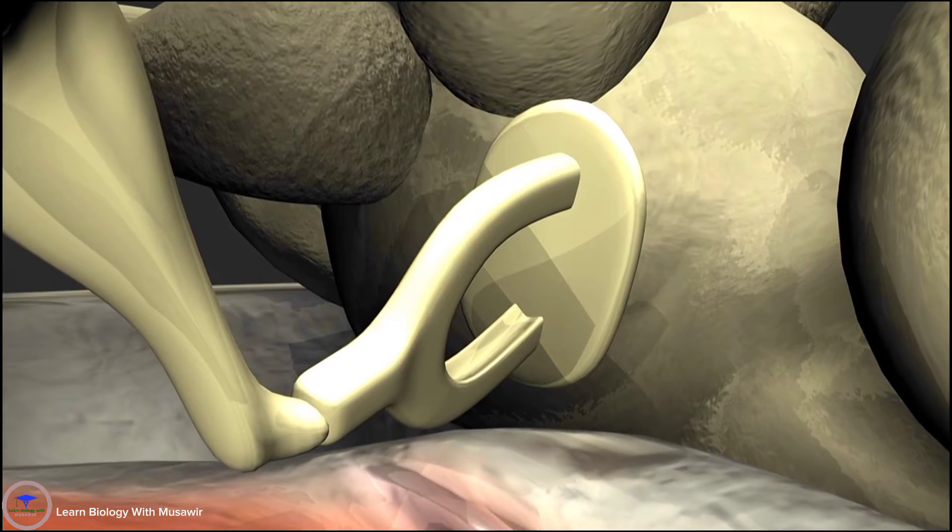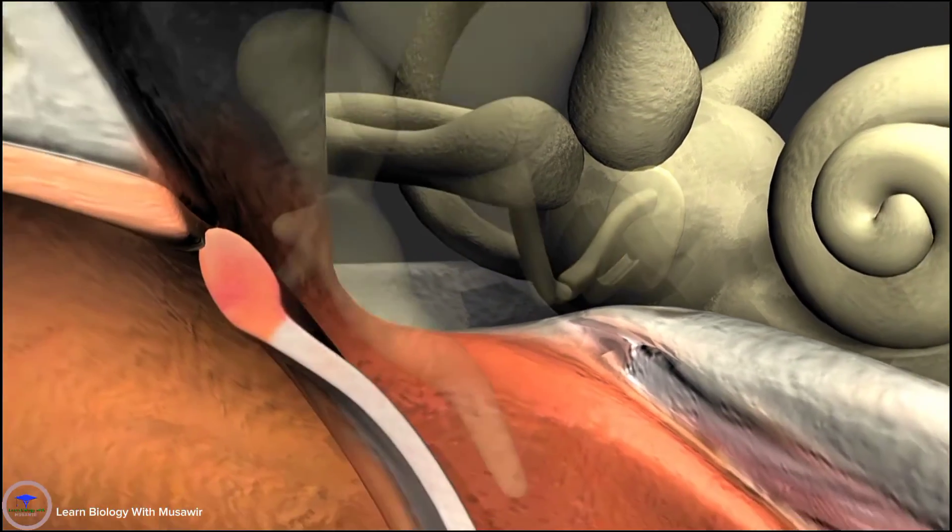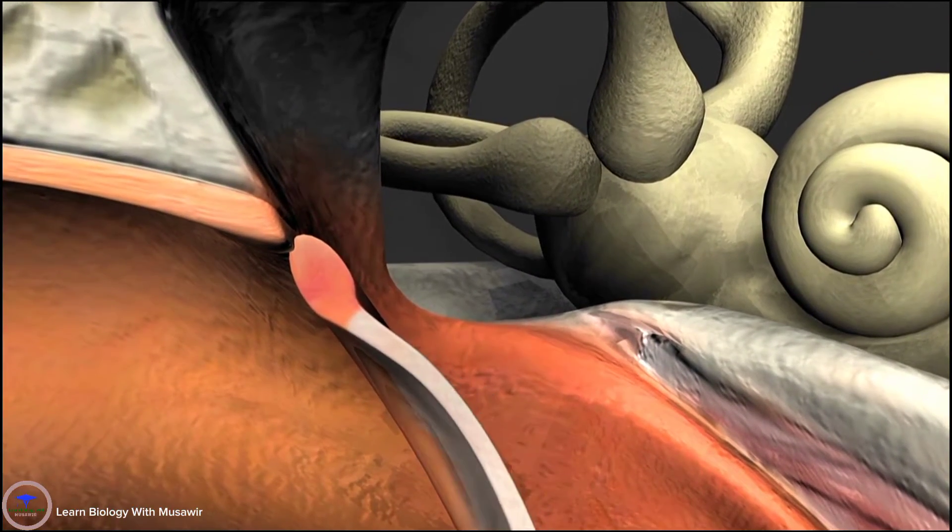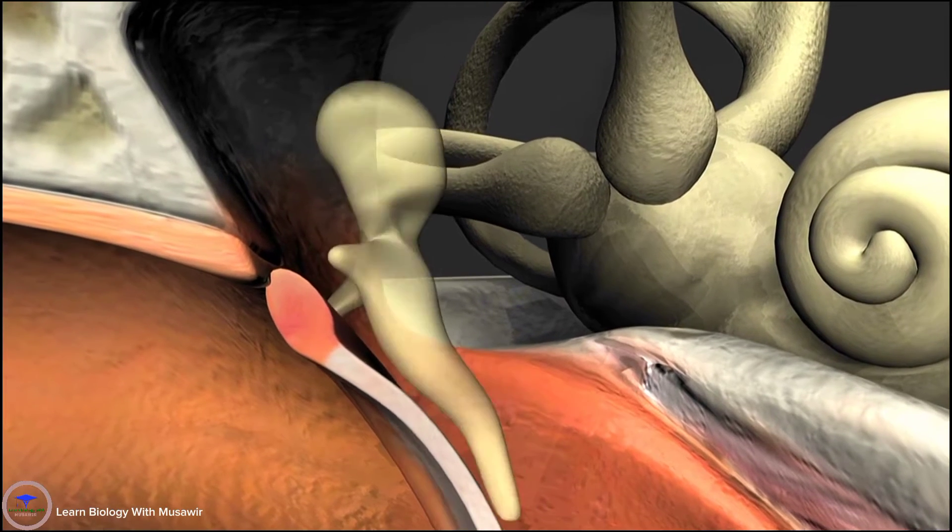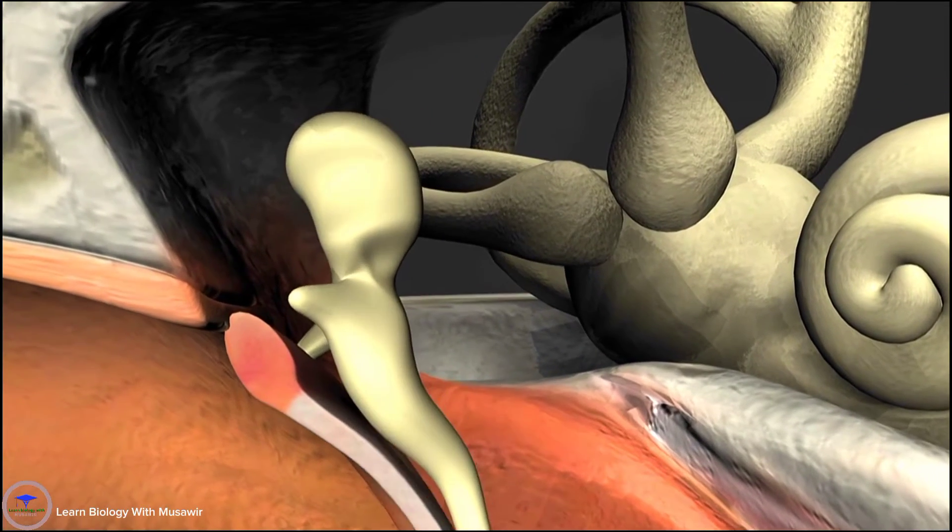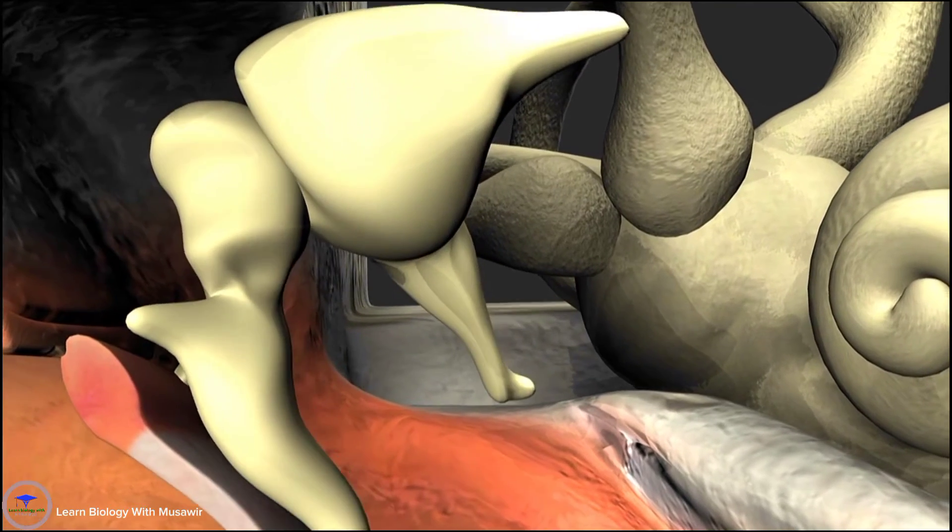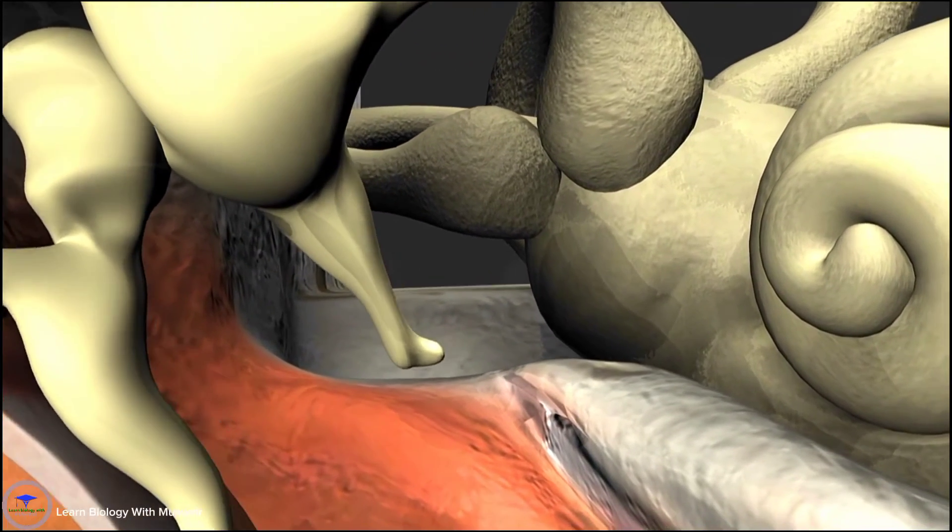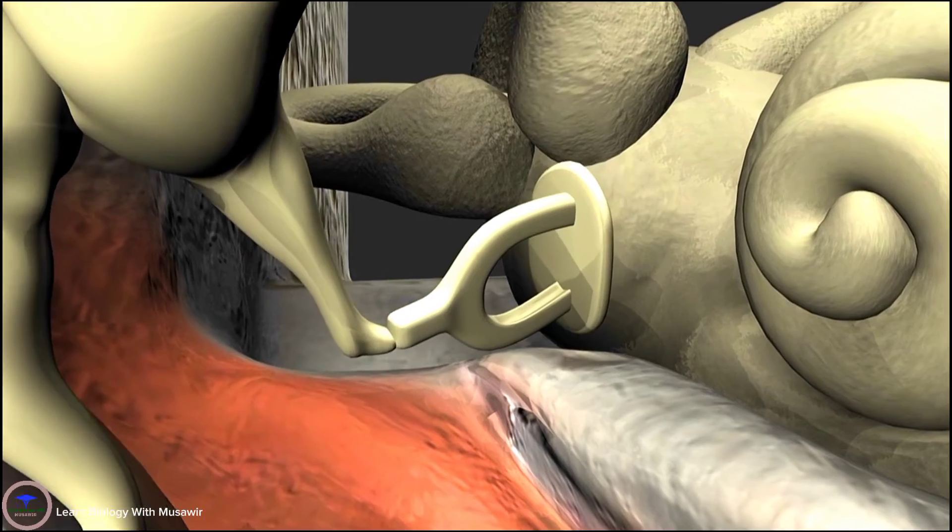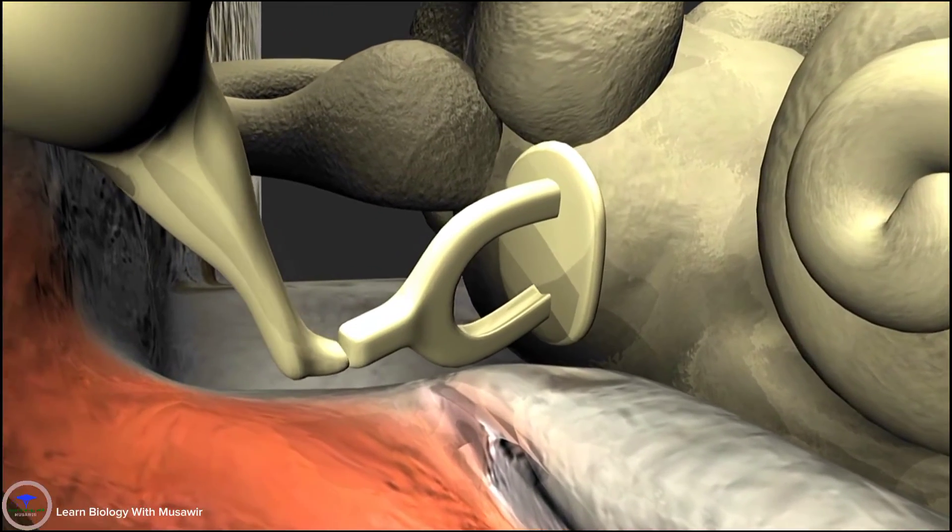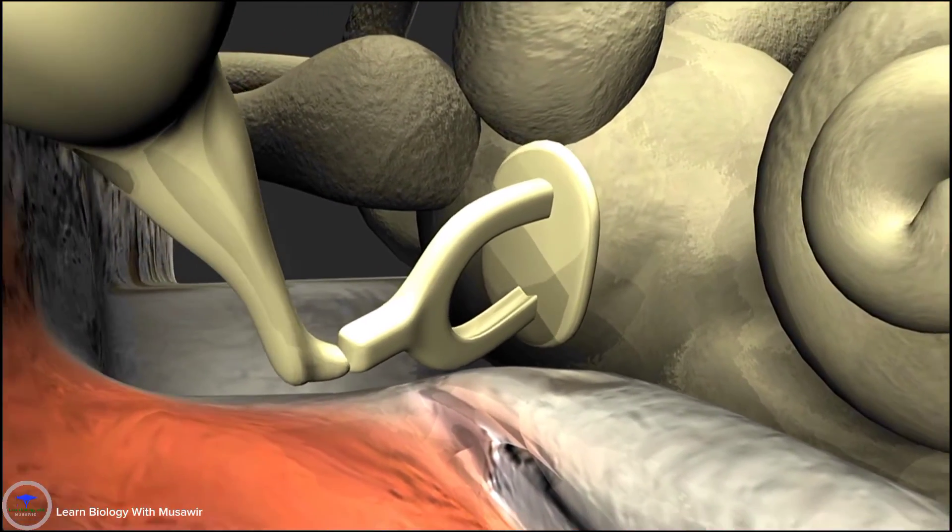The tympanic membrane vibrates in response to sound. The eardrum moves the malleus, which in turn moves the incus and then the stapes, the footplate of which moves in and out of the oval window and transfers the energy to the endolymph fluid in the cochlea.